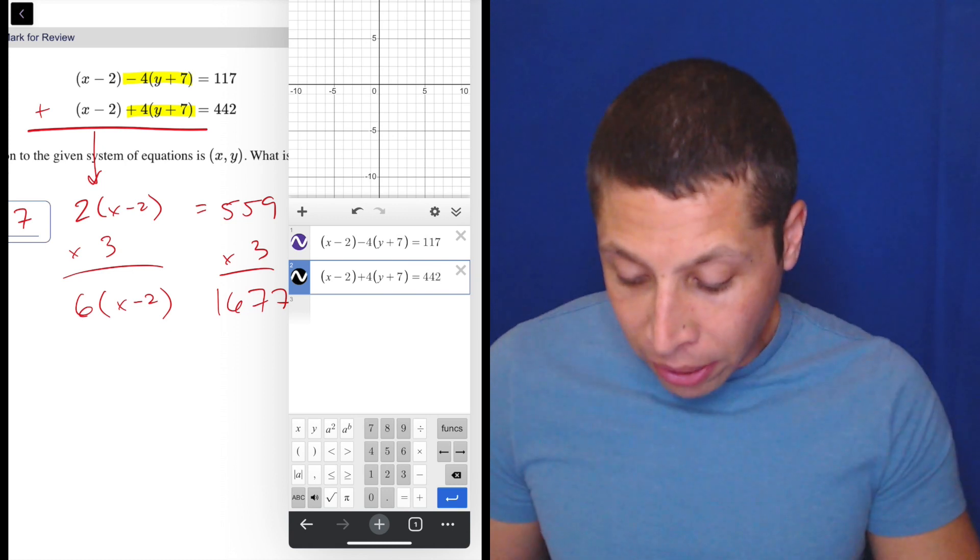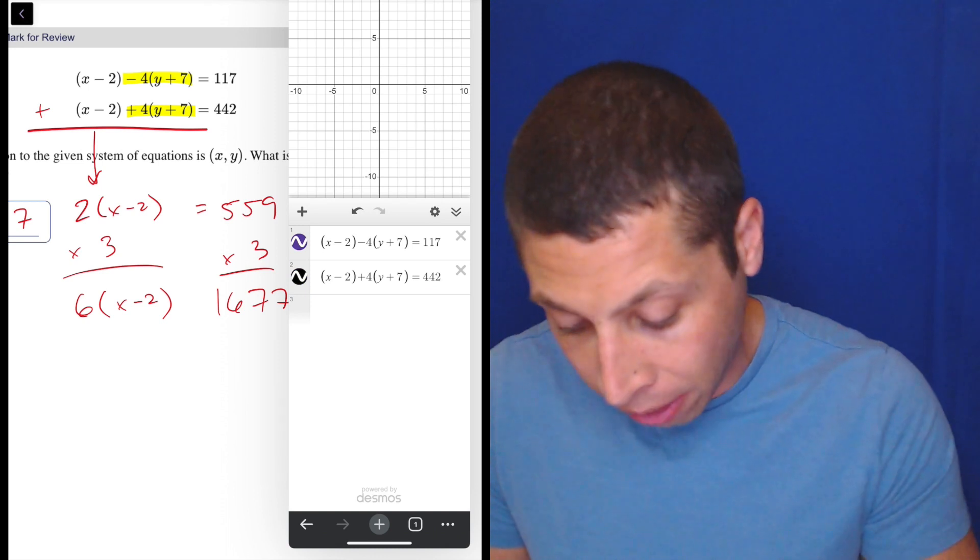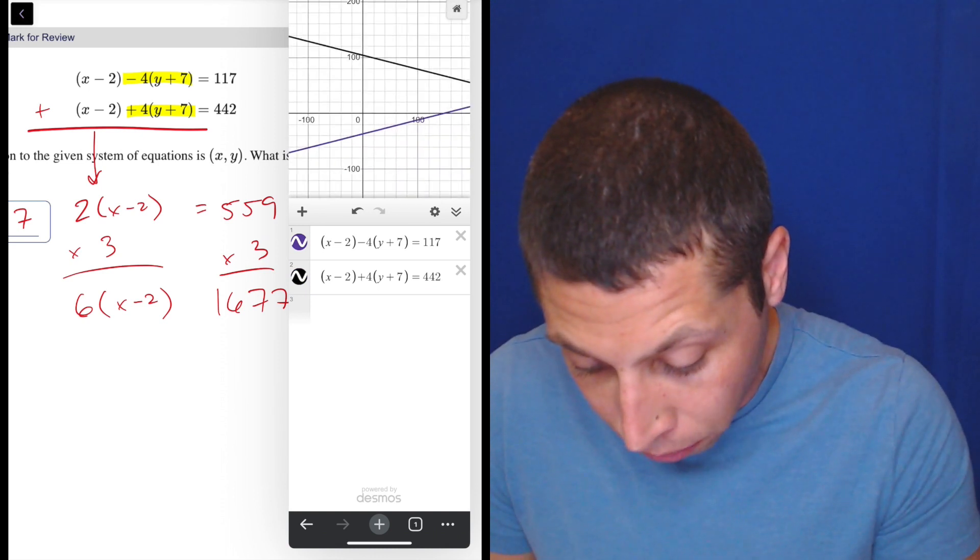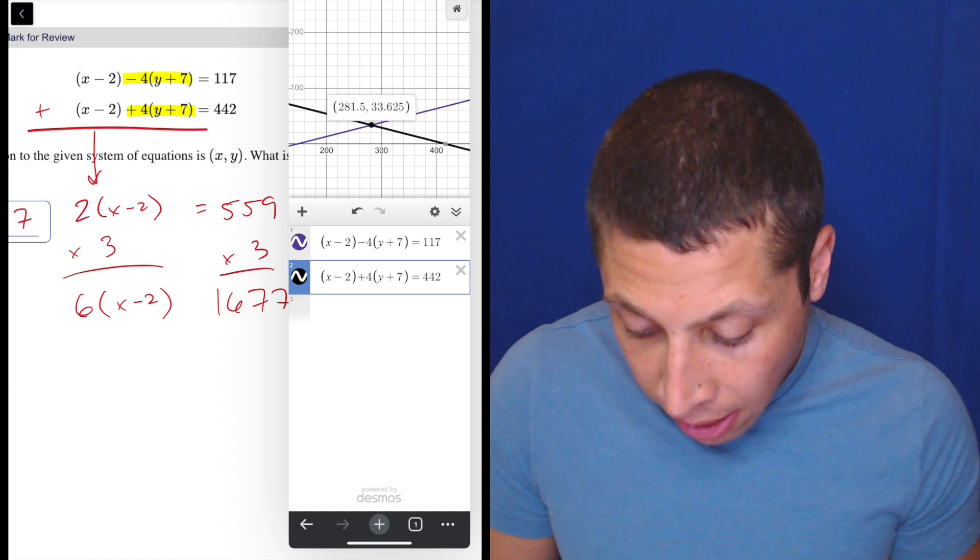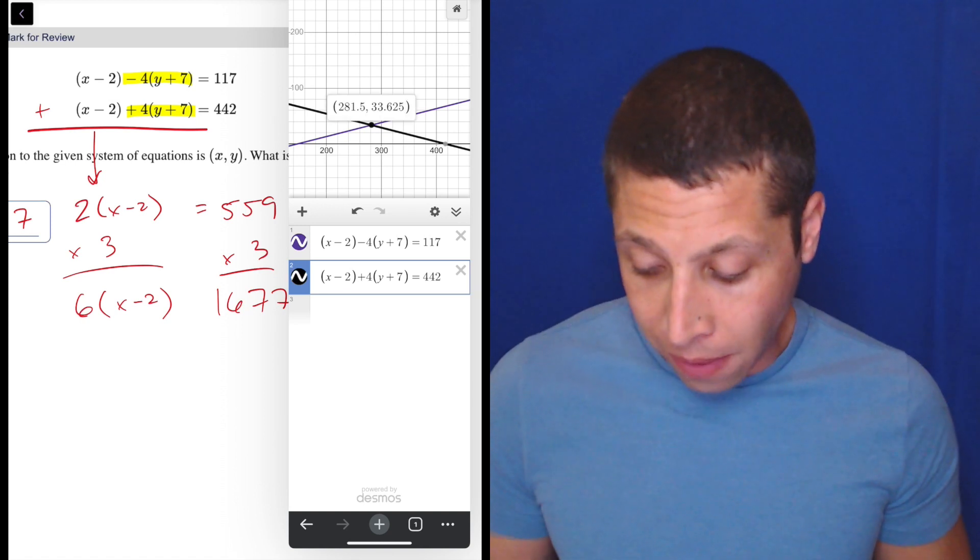And basically, we've got to find the intersection point. You can see from the numbers that they're big. So let's just zoom out. We'll find it eventually. There it is. So this is giving us the values of x and y. 281.5, that's my value of x.